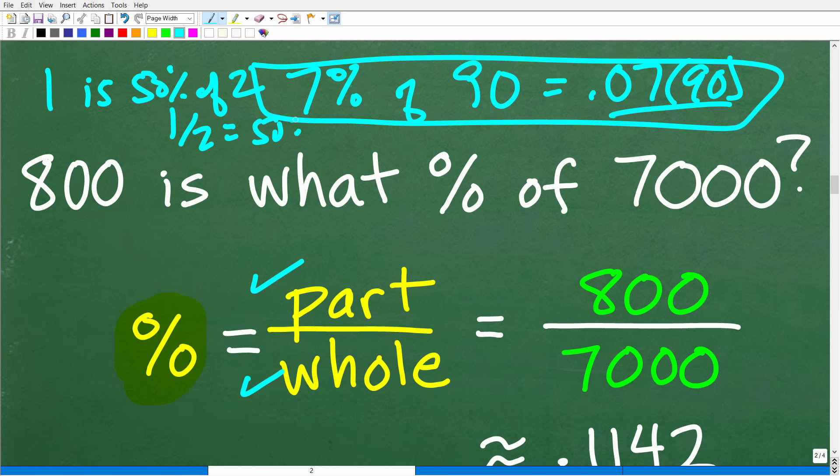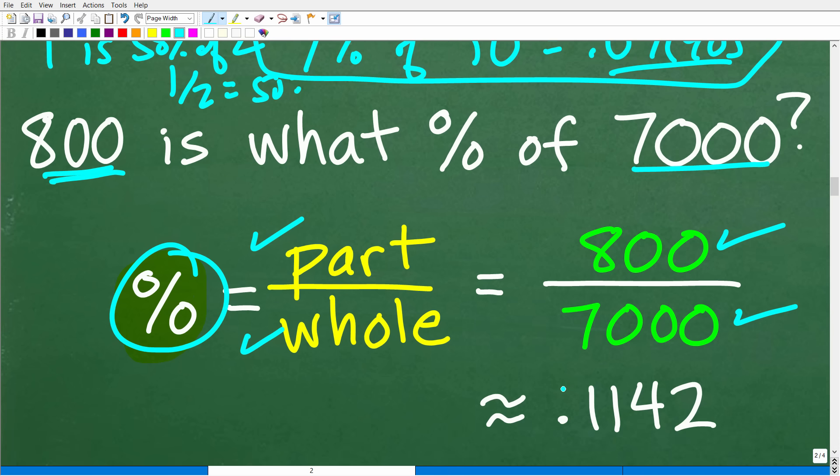So when you have two numbers, 800 is what percent? And I want to know the percentage. Try to think to yourself, what is the part? What is the whole? Well, 800 is some part out of 7,000, okay? So if we take 800 and divide it by 7,000, we're going to get a decimal. Now, not the percentage yet. We want the percent, but we'll get a decimal of 0.1142.